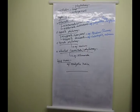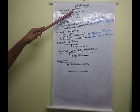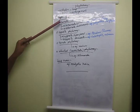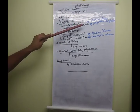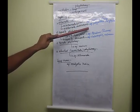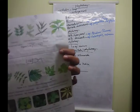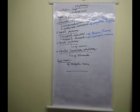If a five-mark question asks about phyllotaxy, write the definition, all four types, and draw the diagram. You must draw the diagram as well as the content to get full marks.